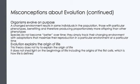Another misconception is that organisms evolve on purpose. A changed environment results in some individuals in the population — those with particular phenotypes — benefiting and therefore producing proportionately more offspring than other phenotypes. Species do not become better over time. They simply track their changing environment with adaptations that maximize their reproduction in a particular environment at a particular time. Another misconception is that evolution explains the origin of life. The theory of evolution does not try to explain the origin of life. Evolution does not shed light on the beginnings of life, including the origins of the first cells, which is how life is defined.